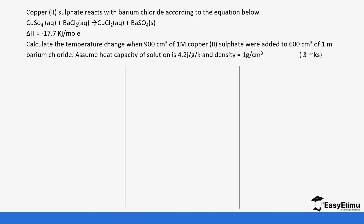Let's do one more question. Copper sulfate reacts with barium chloride according to the equation: copper sulfate + barium chloride → copper chloride + barium sulfate (solid). The heat change is given as −17.7 kJ/mol, which confirms it is an exothermic reaction. Calculate the temperature change when 900 cm³ of copper sulfate was added to 600 cm³ of 1 mol/dm³ barium chloride.